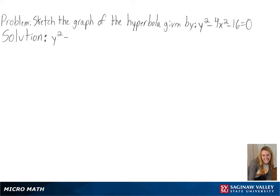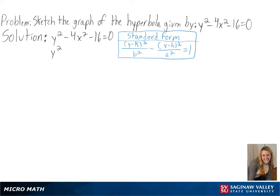Our problem is to sketch the graph of the hyperbola given by y squared minus 4x squared minus 16 equals 0. The first part of our solution is to put our equation in standard form as shown.